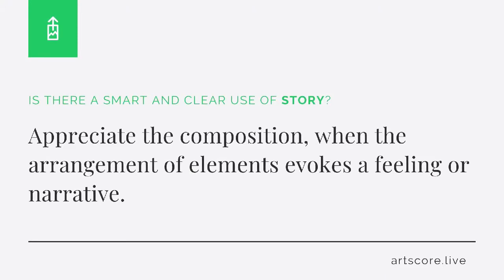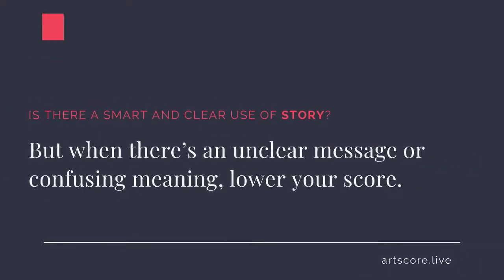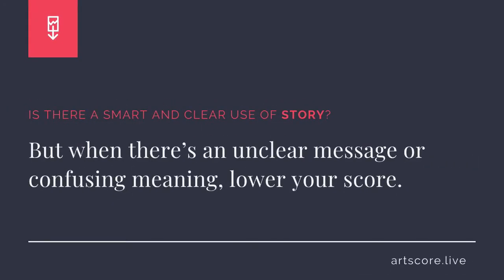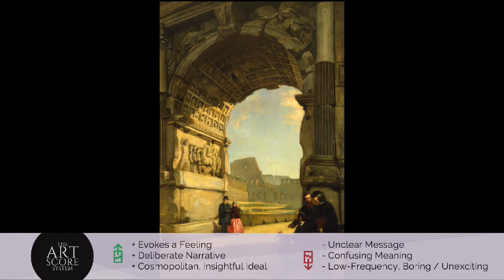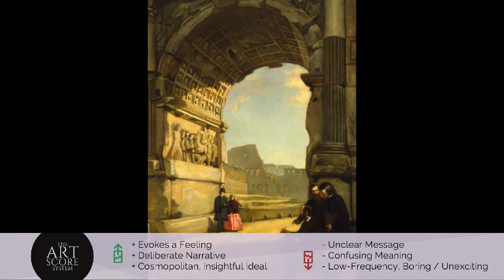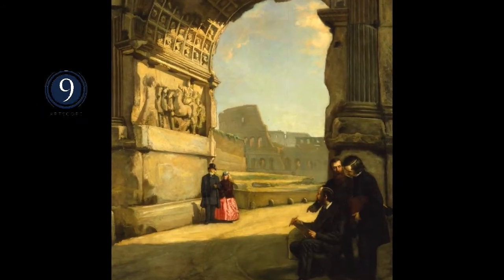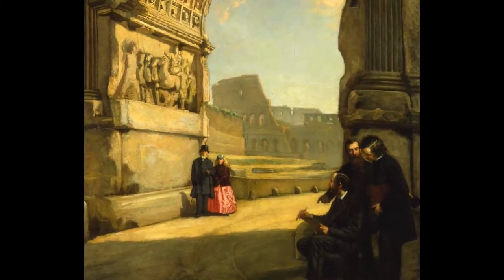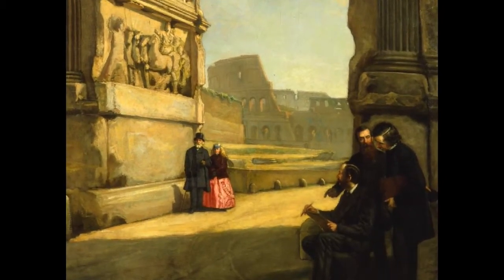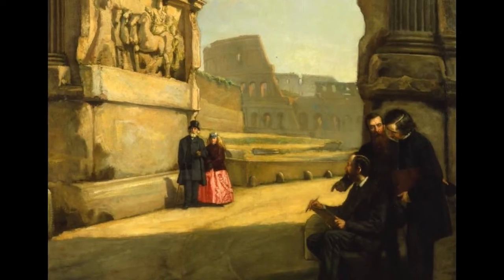Story. Is there a smart and clear use of story? Appreciate the composition when the arrangement of elements evokes a feeling or narrative. But when there's an unclear message or confusing meaning, lower your score. I scored the composition at 9. For me, I clearly see how the elements evoke a deliberate story. What's your score?